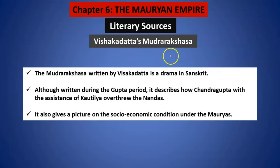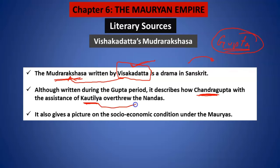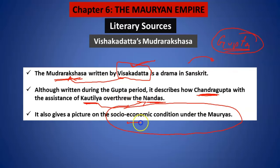Apart from this, when we study the Gupta period in the future, there was a writer at that time named Vishakhadatta who had written a drama called Mudrarakshasa. In that also, it has been mentioned how Chandragupta Maurya with the assistance of Kautilya was able to overthrow the Nandas. This will also help you understand about the social and economic conditions under the Mauryan people.